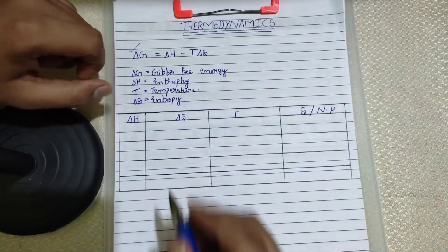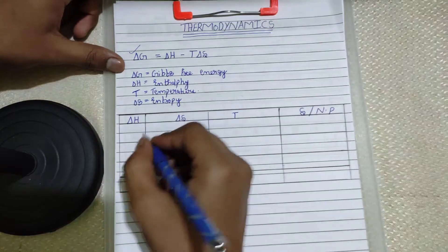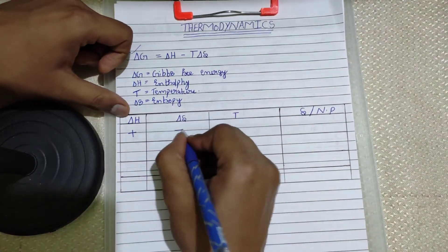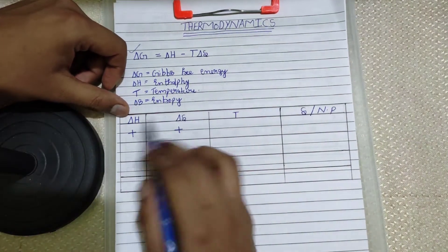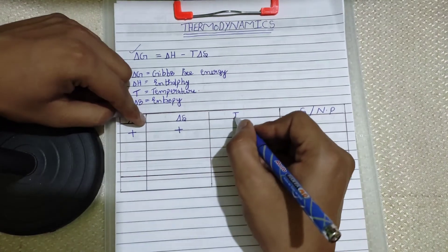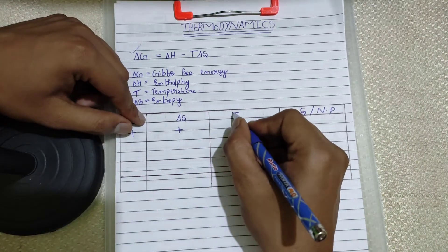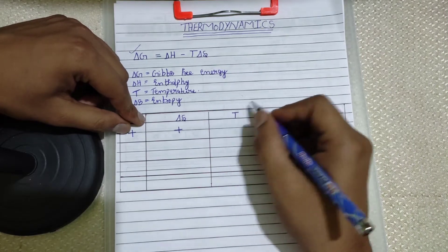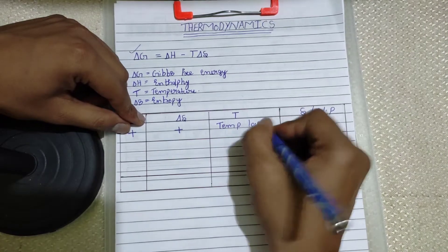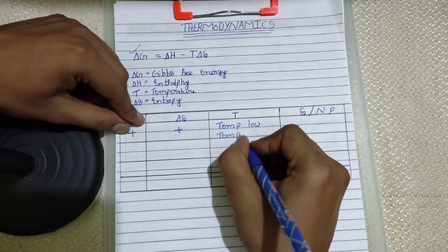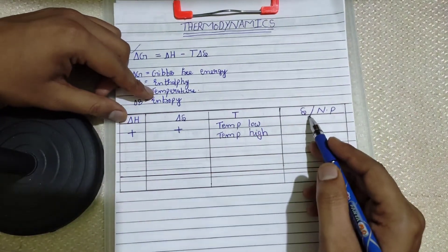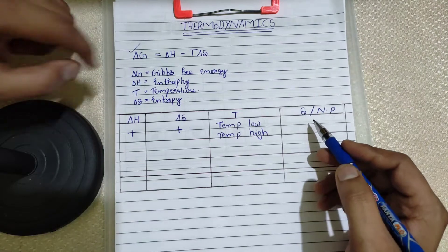Now we have a few cases. In the first case, let's take enthalpy ΔH as positive and entropy ΔS as also positive. For temperature, we divide into two subcategories: when temperature is low and when temperature is high. In both sub-cases we need to identify whether the reaction is spontaneous or non-spontaneous.